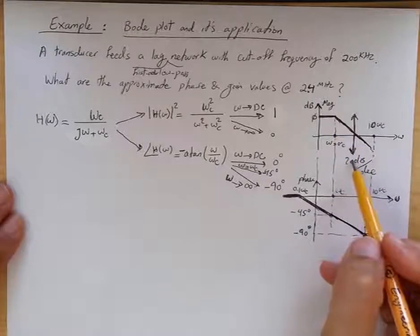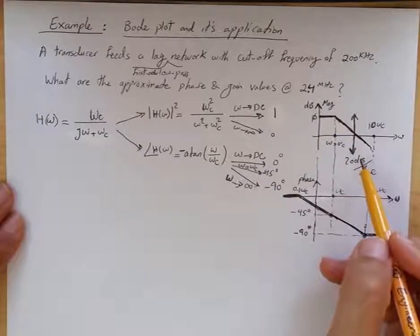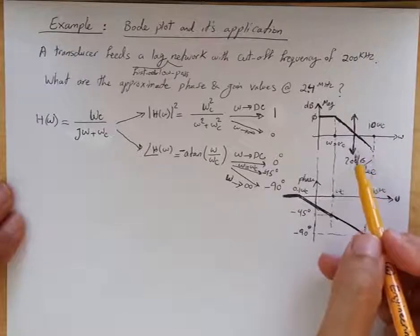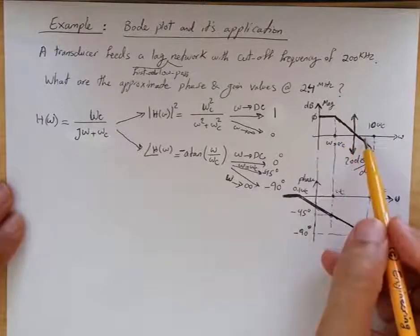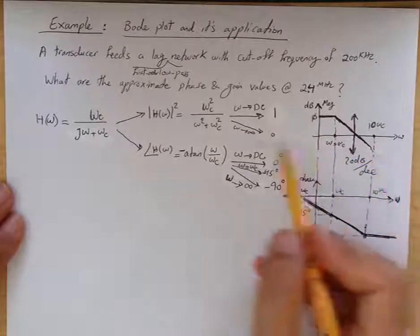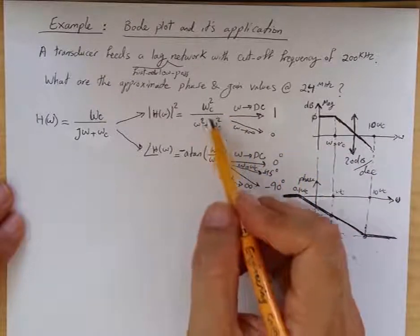That's why we say 20 dB reduction per decade, or 6 dB per octave, which means twice the frequency. That corresponds to this magnitude response behavior.